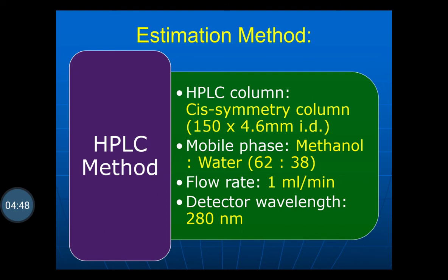Estimation by HPLC method: the column to be used is a C18 symmetric column of 150 × 4.6 mm internal diameter. Mobile phase is methanol:water 62:38. Flow rate through the column should be maintained at 1 ml per minute and detector wavelength 280 nm is used for HPLC.